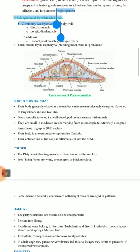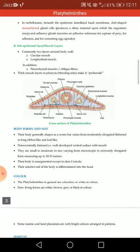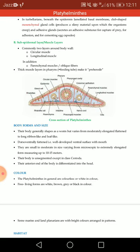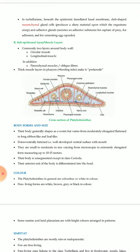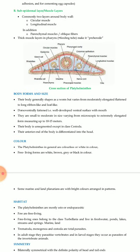The sub-epidermal layer is a muscle layer. Commonly two layers around the body walls are present: circular muscles and longitudinal muscles. In addition, parenchymal muscles or oblique fibers are present. The thick muscle layer in the pharynx makes it prehensile. A diagram is provided here.